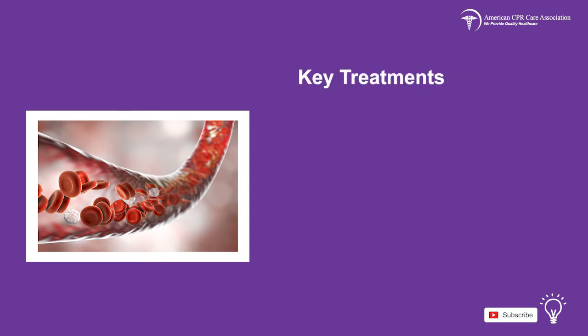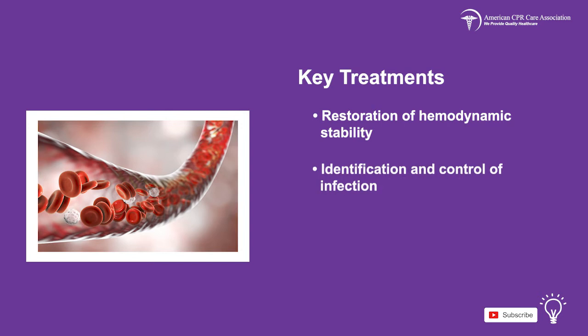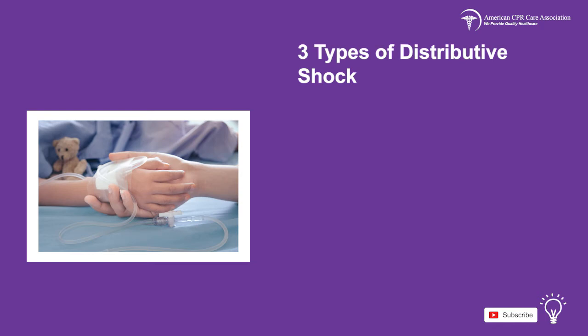The two key treatment options for distributive shock are restoration of hemodynamic stability and the identification and control of infection. Distributive shock is divided into three further types: septic shock, anaphylactic shock, and neurogenic shock.